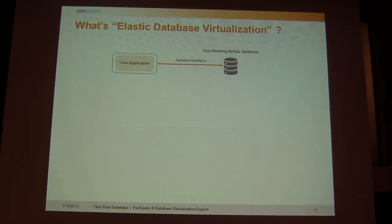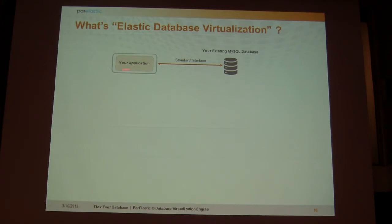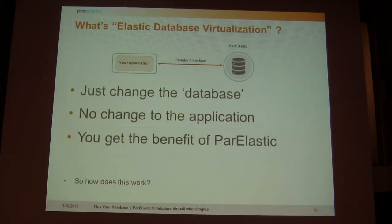Here's what we do. That's your application on the left, that's your existing MySQL database on the right. Your application and database communicate with libmysql — whether it's a PHP app using PDO, a Ruby app using ActiveRecord, or whatever. What do you do with Par Elastic? Nothing. Swap your database out and put us in its place. No changes to your app — just change the connection URL. You need to change nothing in the application to get the benefit of Par Elastic.